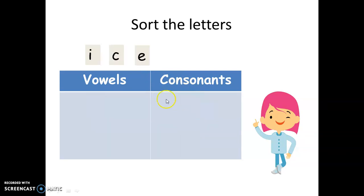And then I, C, E. Which is the vowel? I is vowel or consonant? Vowel. And then C is? Consonant. So, we put it here. And then the E is vowel.